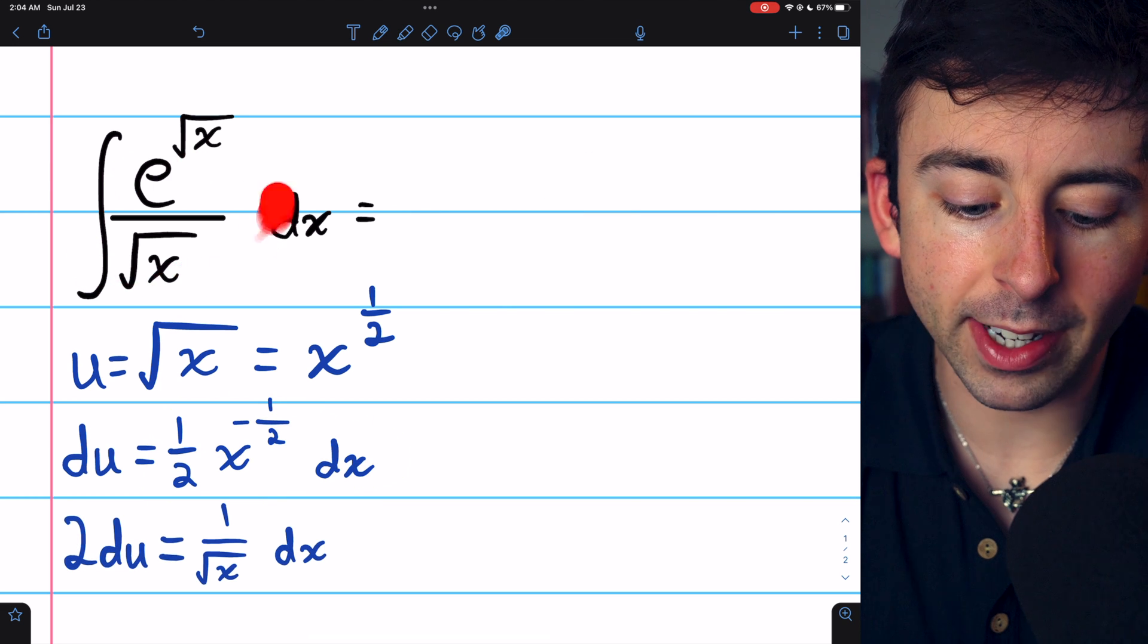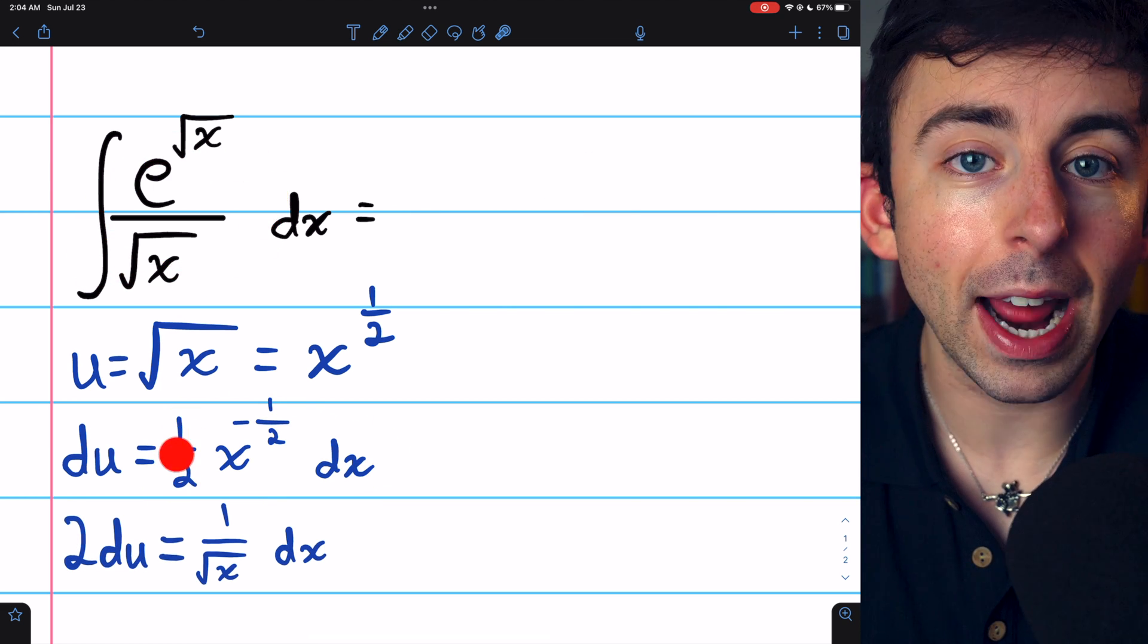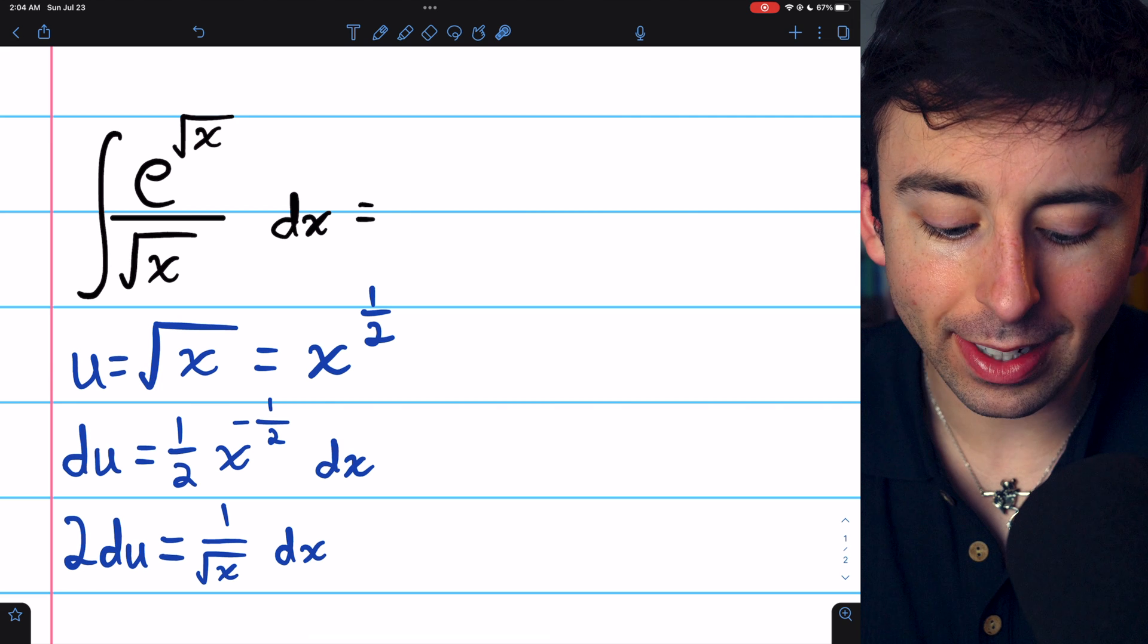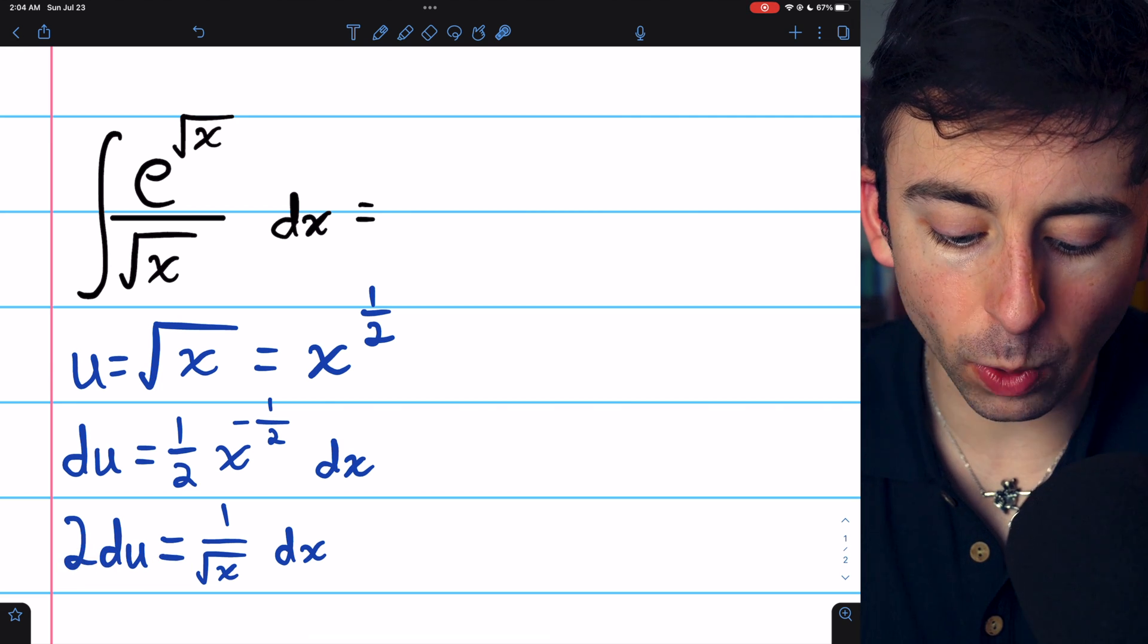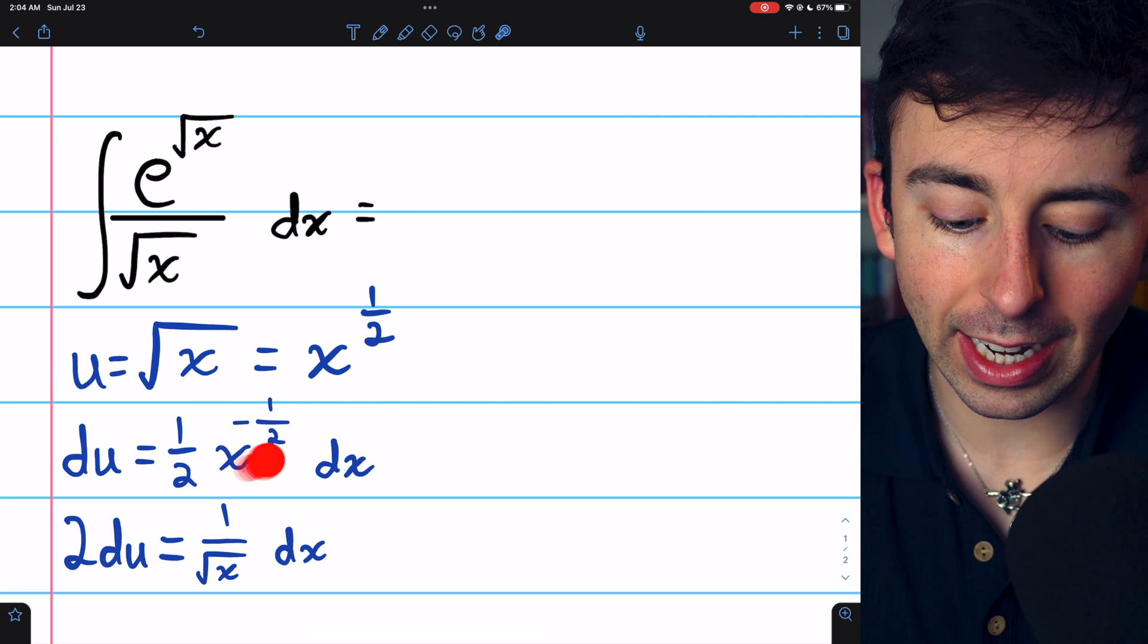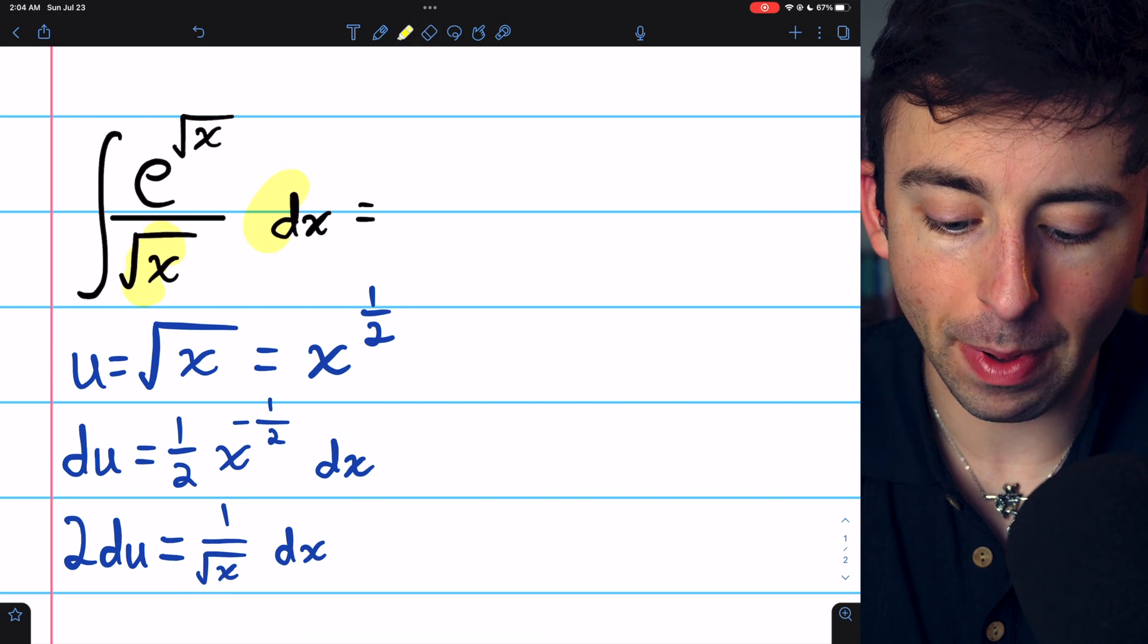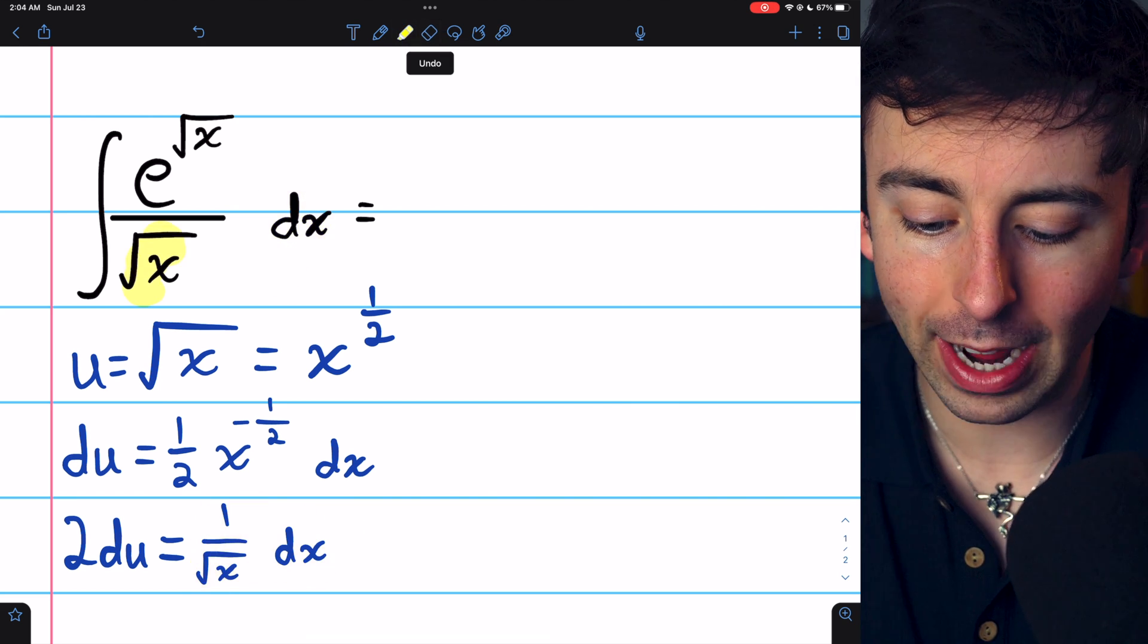Notice that our integrand does not have a factor of one-half, so we can multiply both sides of this equation by two to get two du equals, I'm rewriting this negative half power as one over the square root of x, and you can see how this will match up with what's in our integrand.